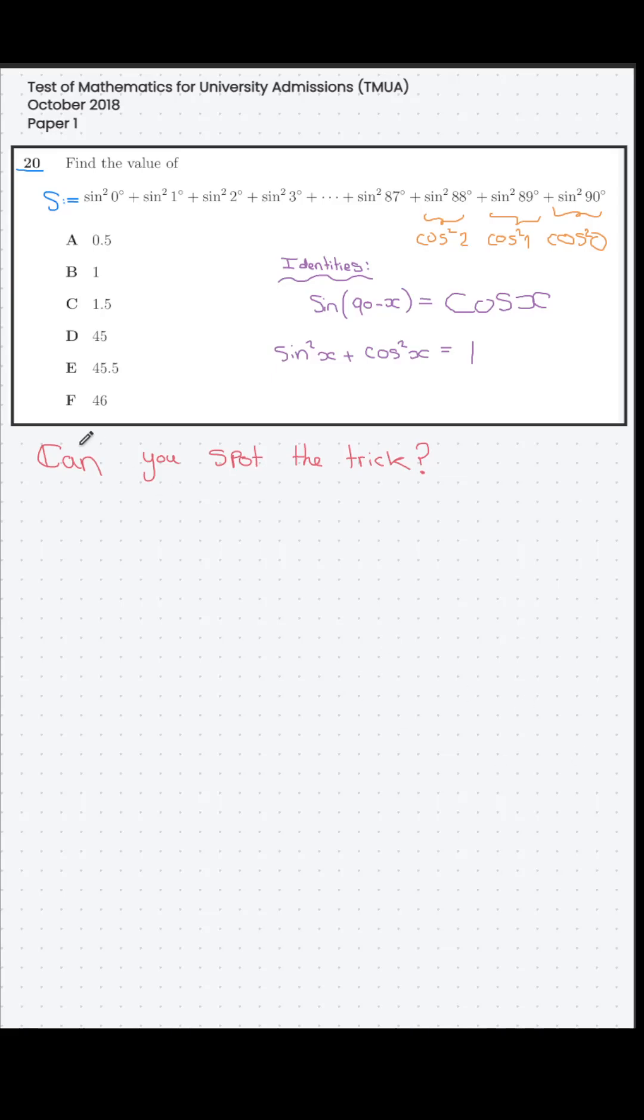So with this observation we can write the sum. We have sine squared 0 plus cosine squared 0. Everything in degrees of course.